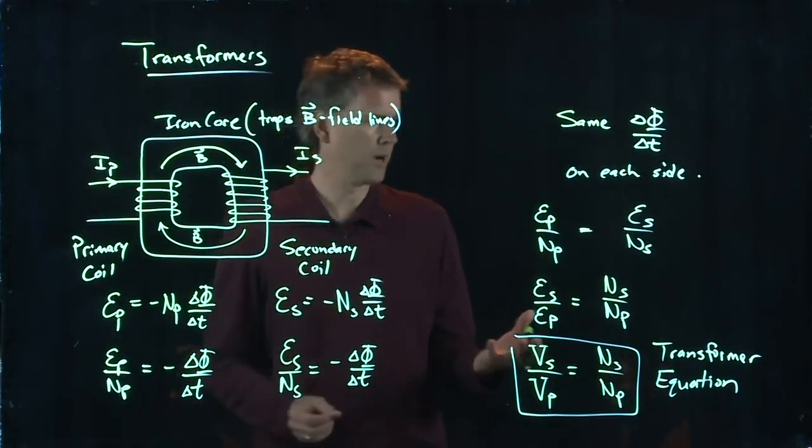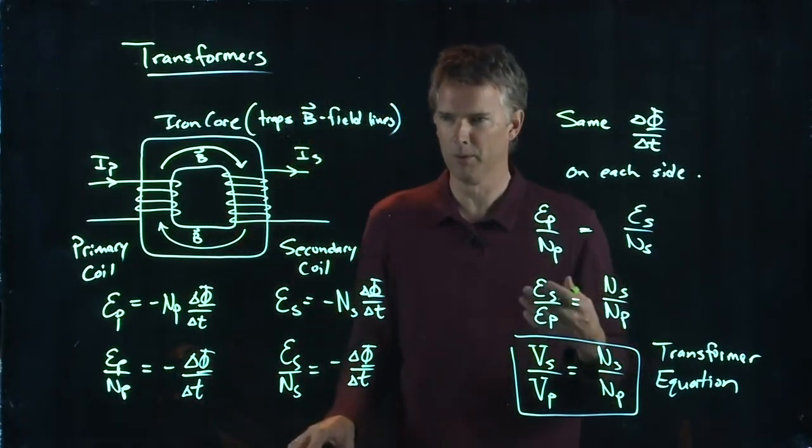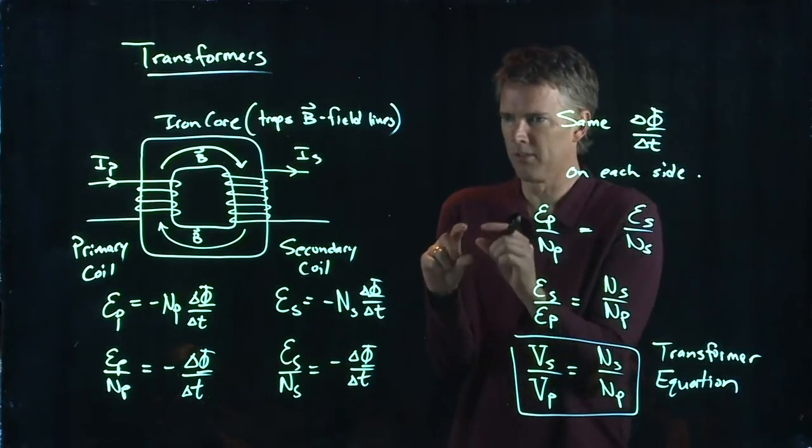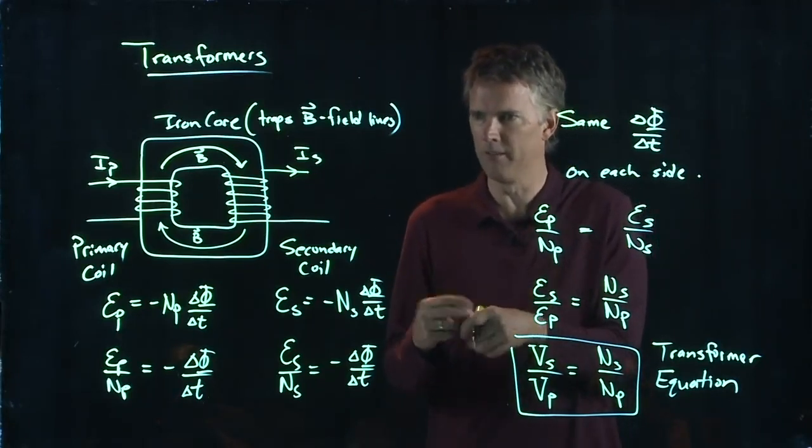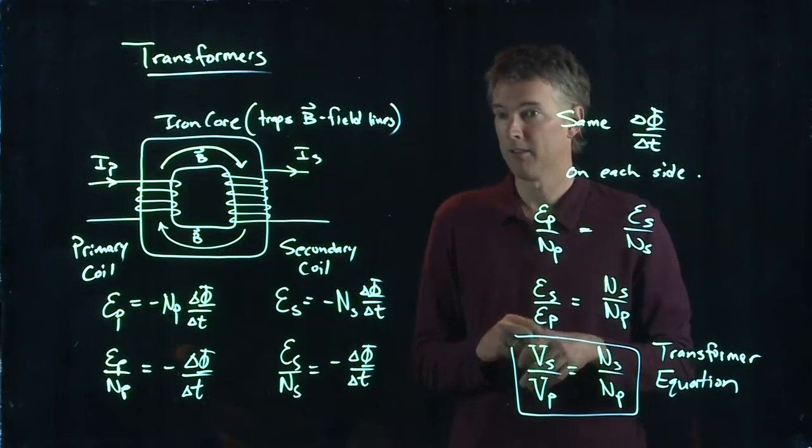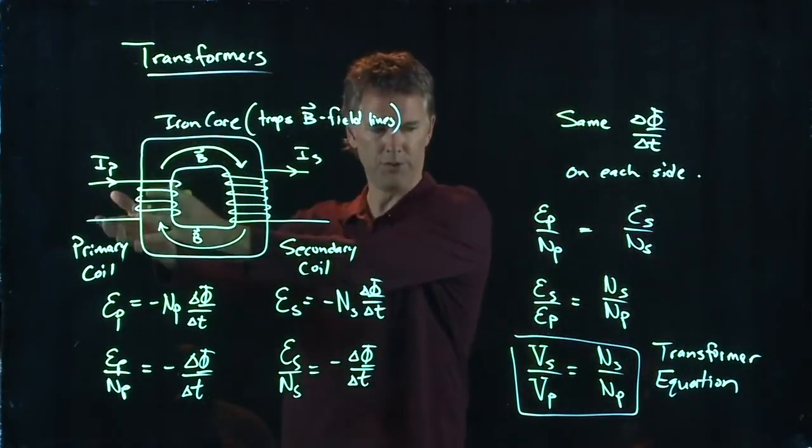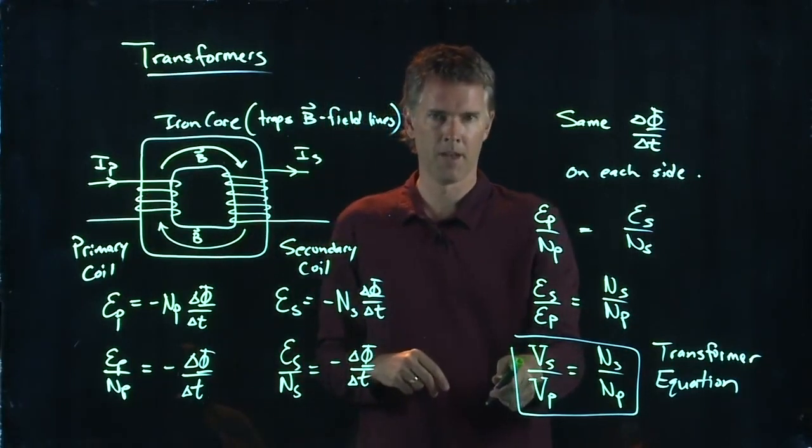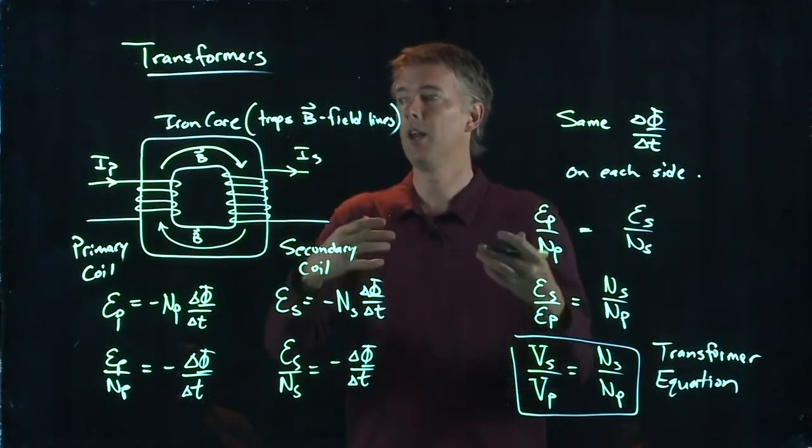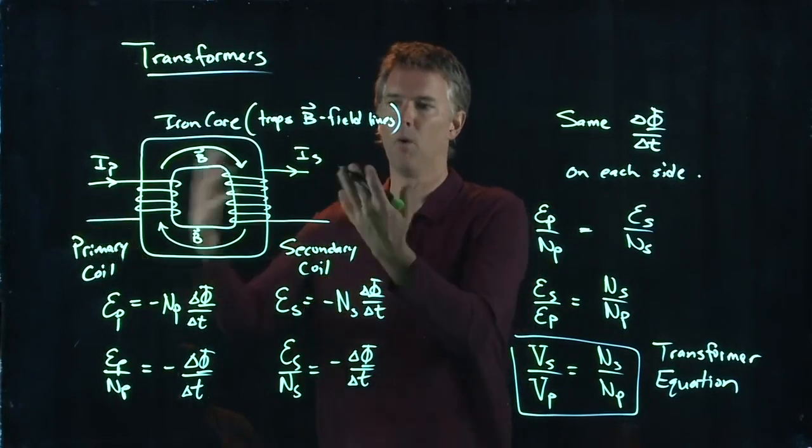I guess they're still pretty popular because they're making those transformer movies. But transformers was like just this little toy, a little robot that turns into a car and back and forth. And it's kind of named appropriately, right? Because what are we doing? We're taking one voltage, V sub S, and we're turning it into a different voltage, V sub P, or vice versa.